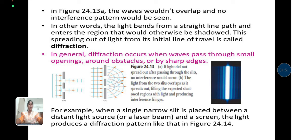The light from the two slits overlaps as it spreads out, filling the expected shadowed regions with light and producing interference fringes. For example, when a single narrow slit is placed between a distant light source and a screen, the light produces a diffraction pattern as shown in the picture.